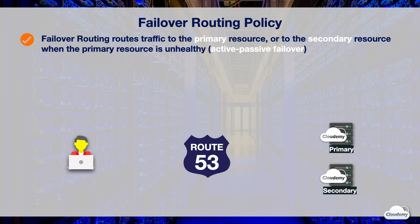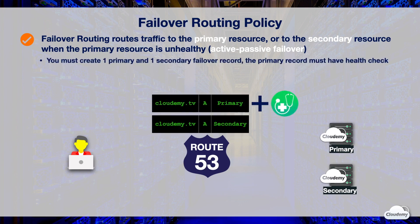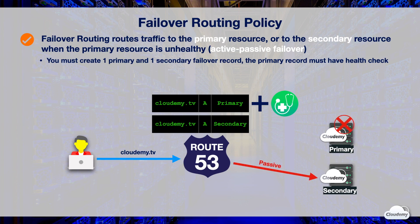For failover to function correctly, you must create a primary record and a secondary failover record. You can create only one failover record of each type. The primary record must have health check enabled. Route 53 always tries to route traffic to the primary resource. When the primary resource becomes unhealthy, Route 53 routes the traffic to the secondary resource. When Route 53 detects that the primary resource becomes healthy again, it routes traffic back to the primary resource.